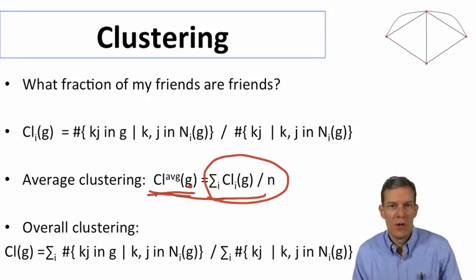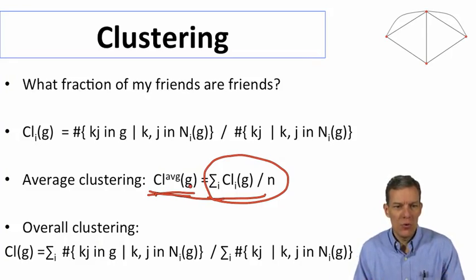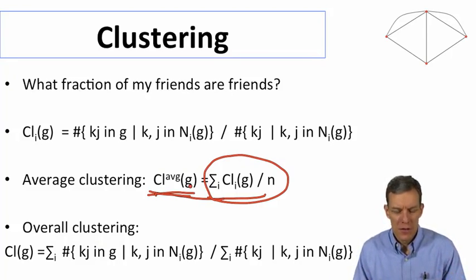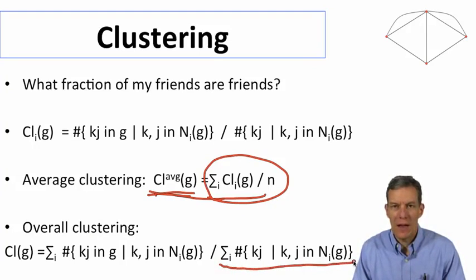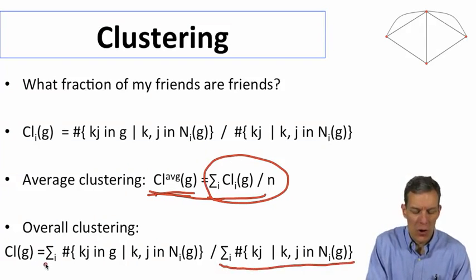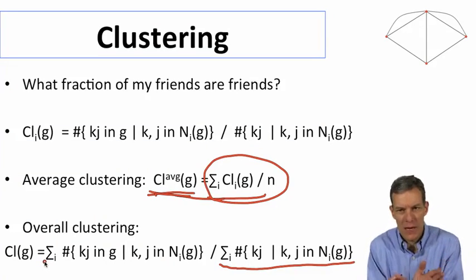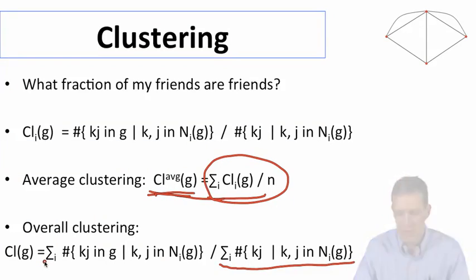And another way to do this would be instead to look at overall clustering. So look at all possible nodes and pairs of friends that they have and ask overall in the whole network, every time we've got a particular situation which looks like this,